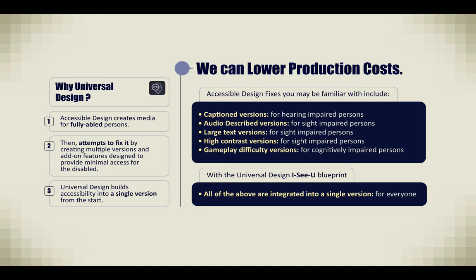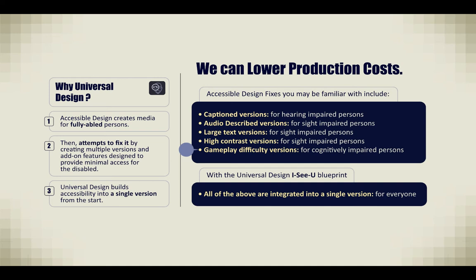Why universal design? We can lower production costs. Accessible design creates media for fully abled persons, then attempts to fix it by creating multiple versions and add-on features designed to provide minimal access for the disabled. Universal design builds accessibility into a single version from the start. Some accessible design fixes include captioned versions for hearing impaired persons, audio described versions, large text versions, high contrast versions for sight impaired persons, and gameplay difficulty versions for cognitively impaired persons. With the universal design ICU blueprint, all of the above are integrated into a single version for everyone.